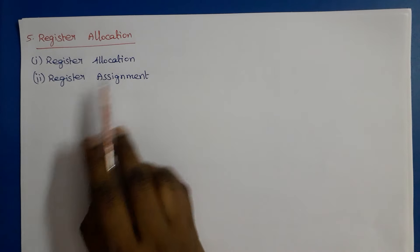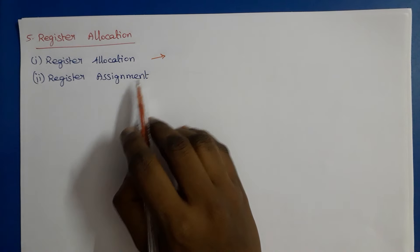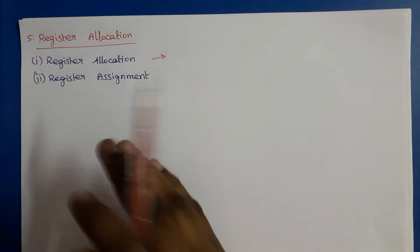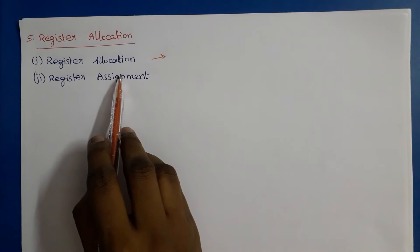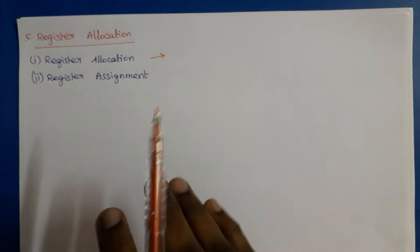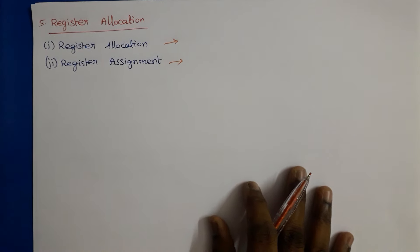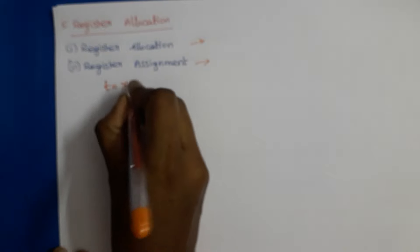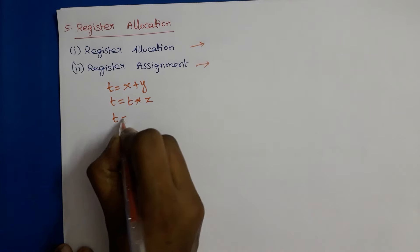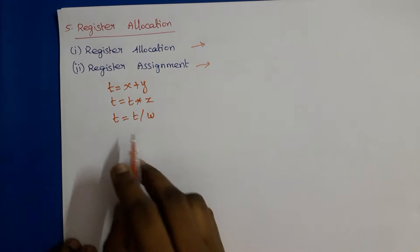The fifth issue is register allocation, which is considered as two sub-problems: register allocation and register assignment. Register allocation selects the set of variables that will reside in registers. Register assignment is the opposite — we choose which specific register a particular variable should be stored in. Register allocation determines what variables should reside in registers, while register assignment picks the particular register for each variable.